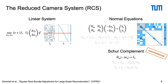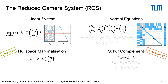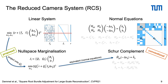We propose to avoid explicitly forming normal equations. Instead, we QR decompose the landmark Jacobian JL and project the linear system onto the null space Q2 to eliminate landmark variables. This is the same reduced camera system as the Schur complement. However, by avoiding matrix squares, the proposed method is numerically more stable and allows computing in single precision.